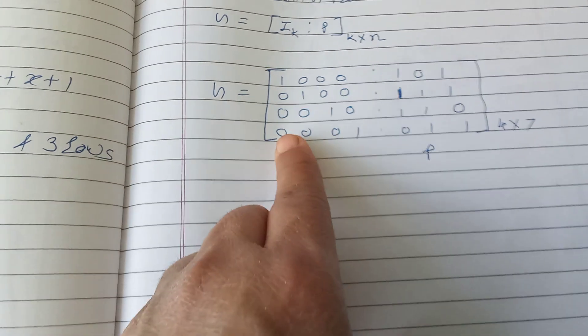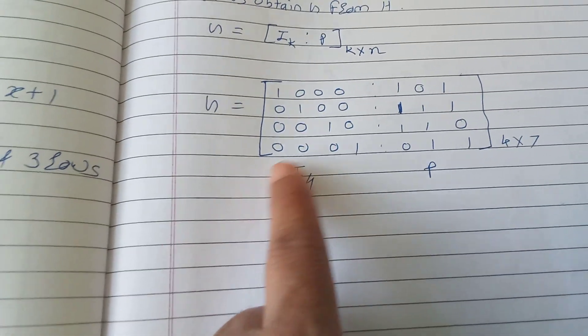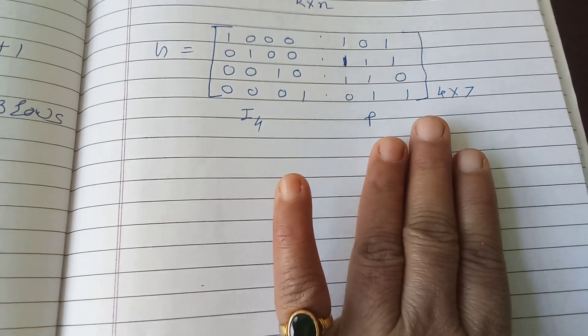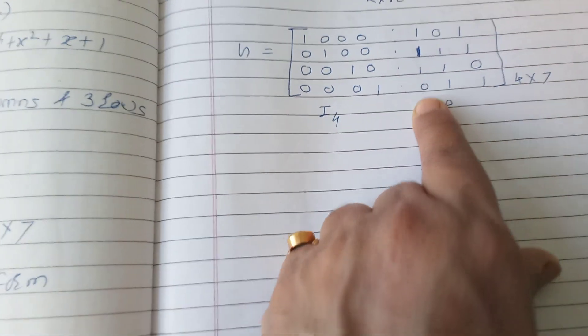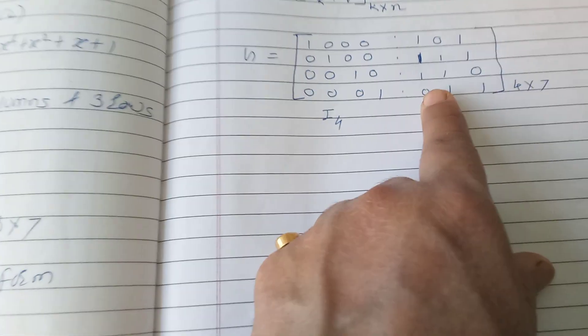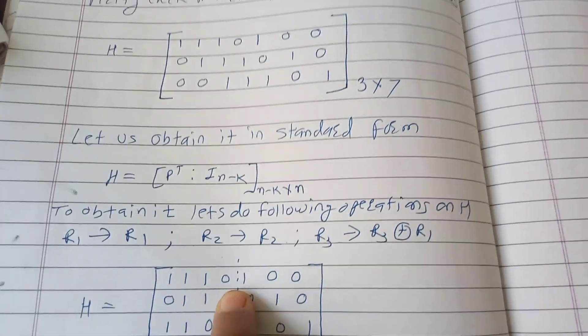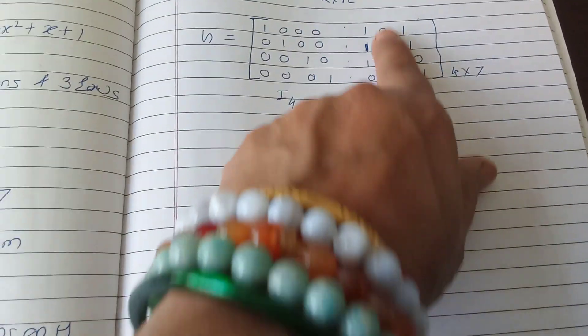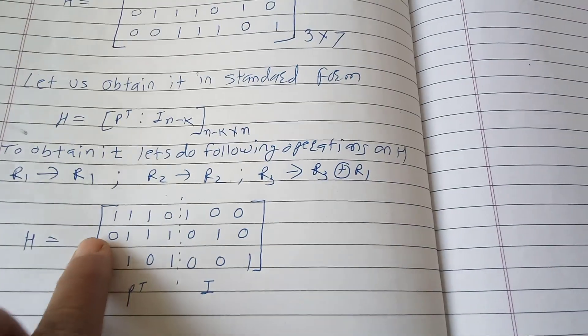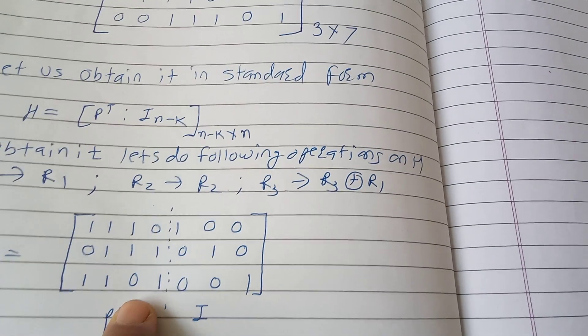So in this way you obtain generator matrix from the H matrix, as well as from generator matrix you can obtain the H matrix. So H matrix - you have to remember here you have to perform the 3 by 3 identity matrix, and then transpose this P. So this row will become the column now, so this column becomes the row [1,1,0], and this column will become the second row [0,1,1,1], and this column will become the third [1,1,0].